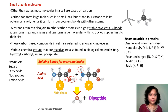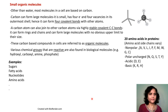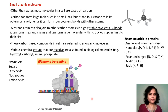Two amino acids can come together and form a peptide bond by the removal of one water molecule, forming what we call a dipeptide. A chain of such amino acids is referred to as a polypeptide, which forms a protein.